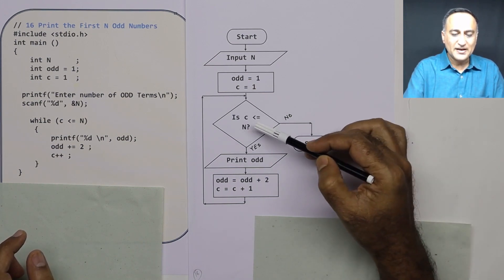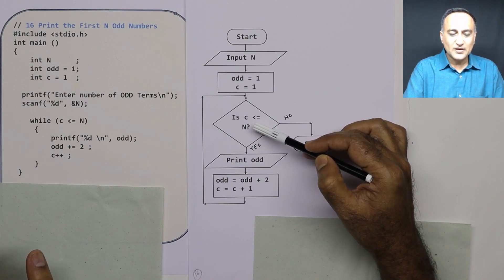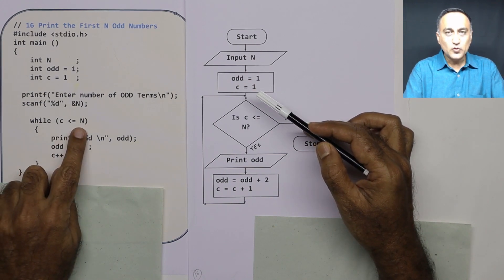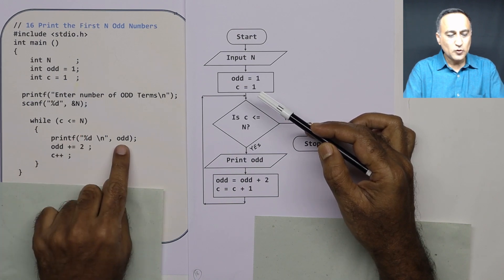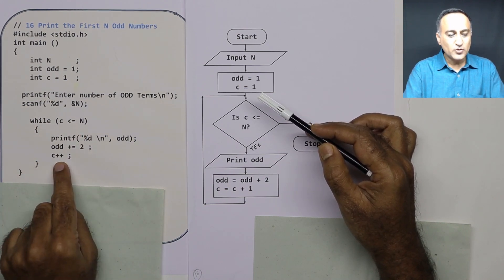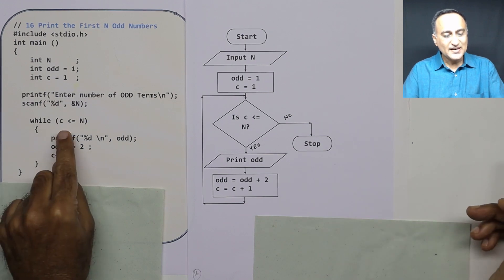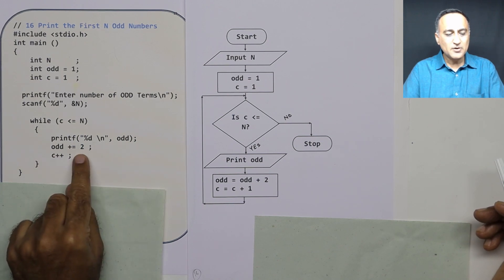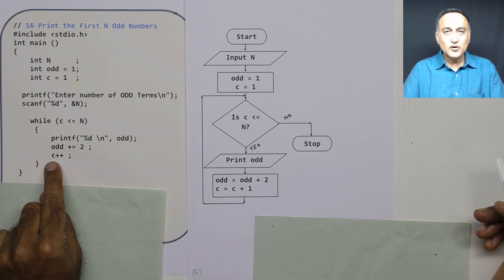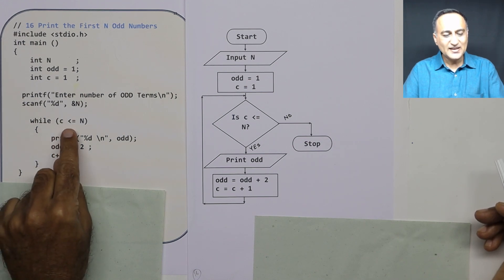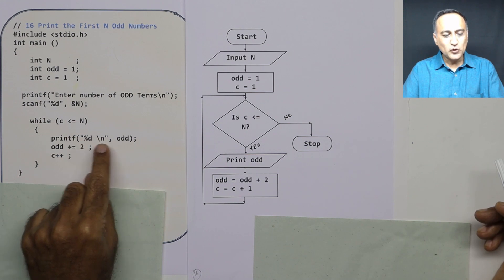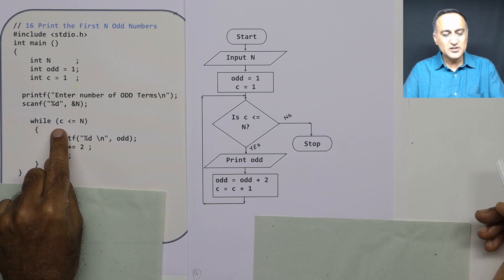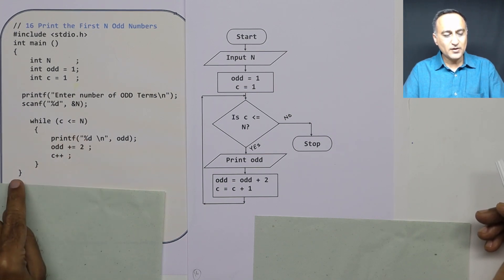Let's take a simple example — let's say n is just 3. So c is 1; 1 is less than or equal to 3, so I print 1. Odd becomes 3, count becomes 2. 2 is still less than or equal to 3, so I print 3. Odd becomes 5, count becomes 3. 3 is still less than or equal to 3, so I print 5. Odd becomes 7, count becomes 4. 4 is not less than or equal to 3, so I come out and stop.